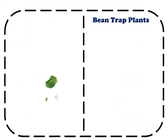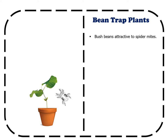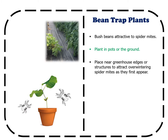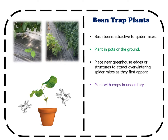Bean Trap Plants: Bush beans are very attractive to spider mites. Plants can be grown in pots or direct seeded into the ground. Effective locations for trapping are along the edges of greenhouses, tunnels, or other structures to attract overwintering spider mites as they first appear. Beans can also be planted along with the crops in the understory. When beans become infested, remove and replant them. Young plants tend to be more attractive than older ones, so it's important to routinely replace them.